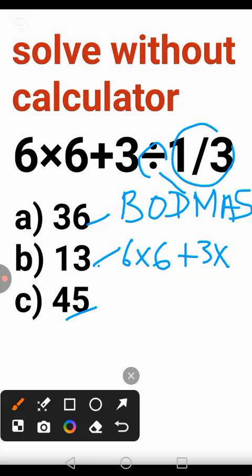The reciprocal of 1/3 is 3/1. Now, 3×3 will give us 9 plus 6×6.